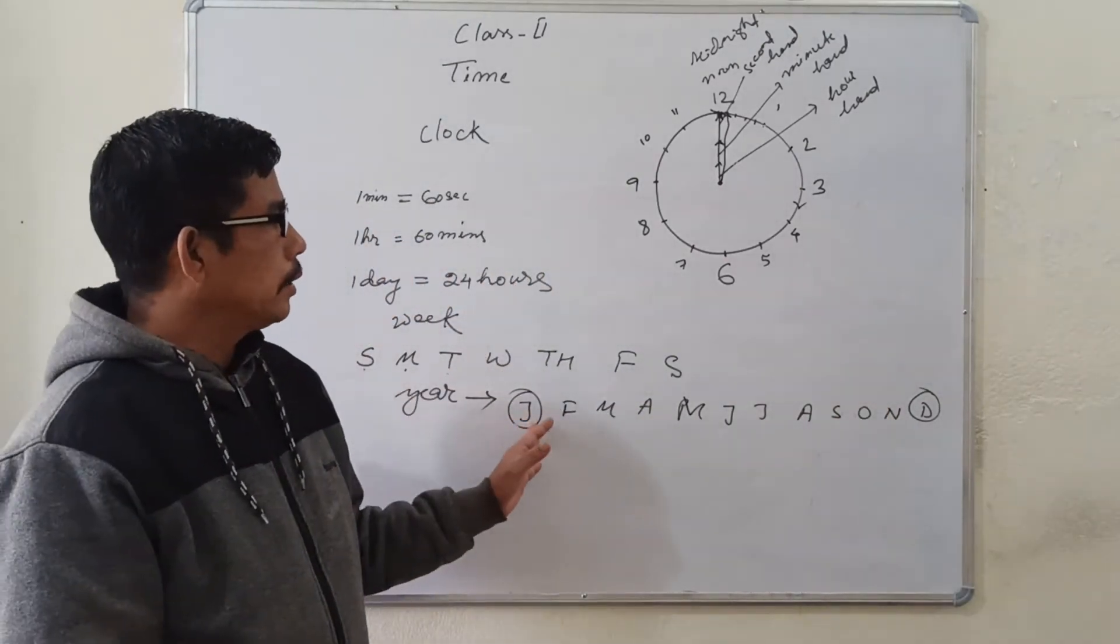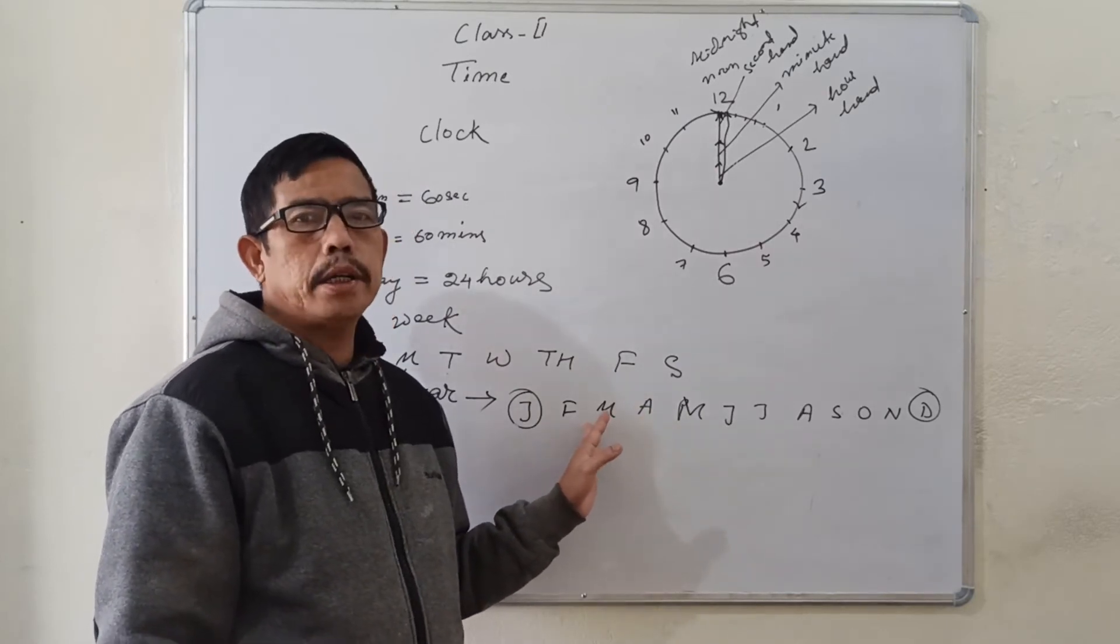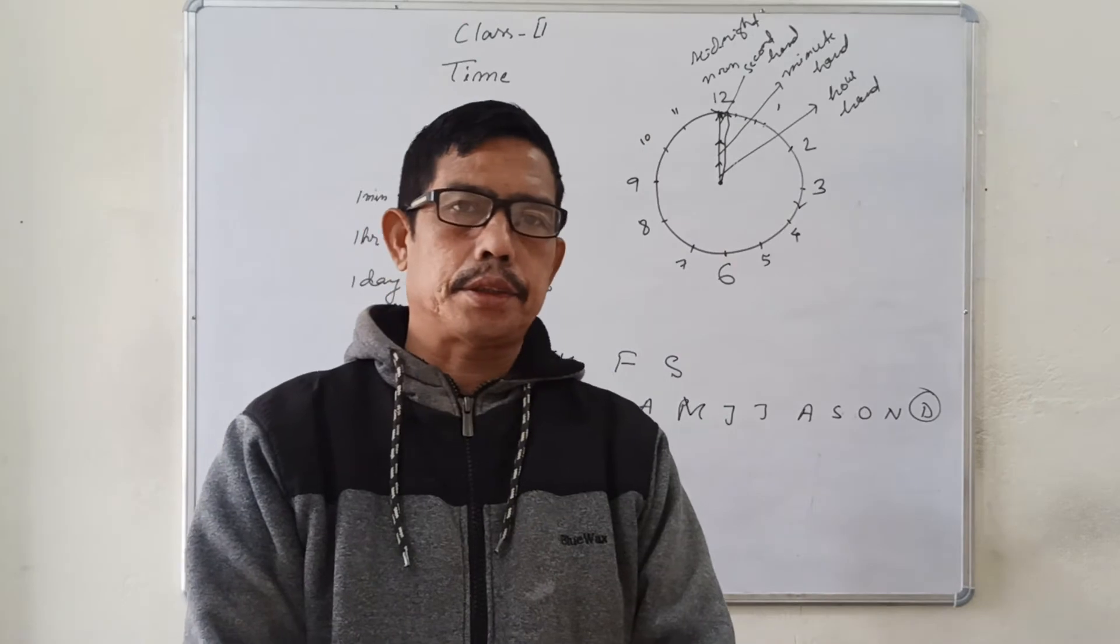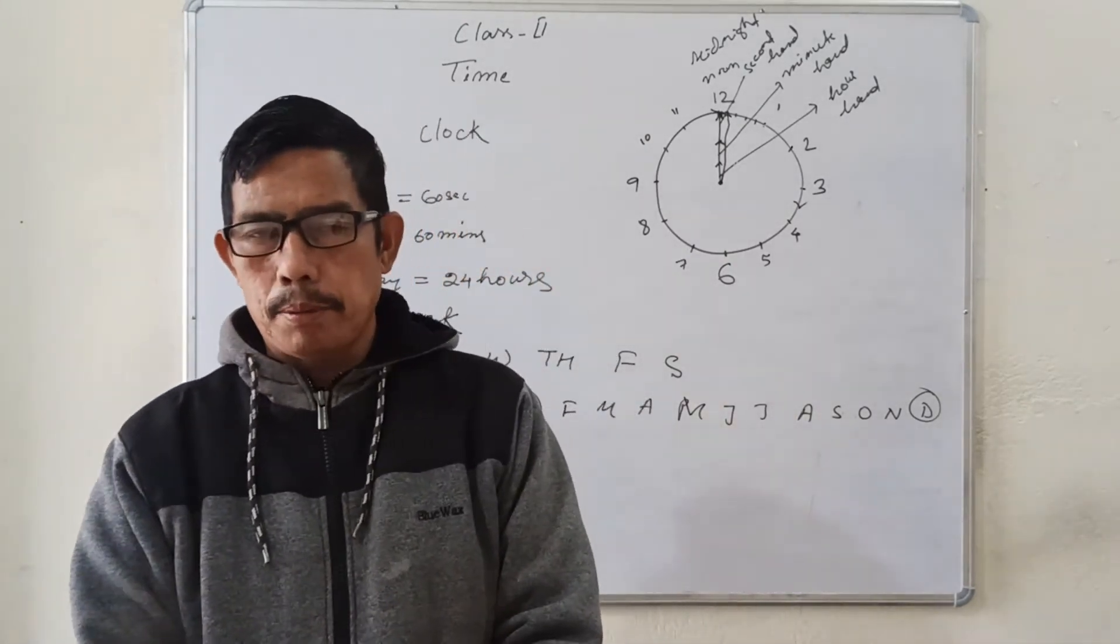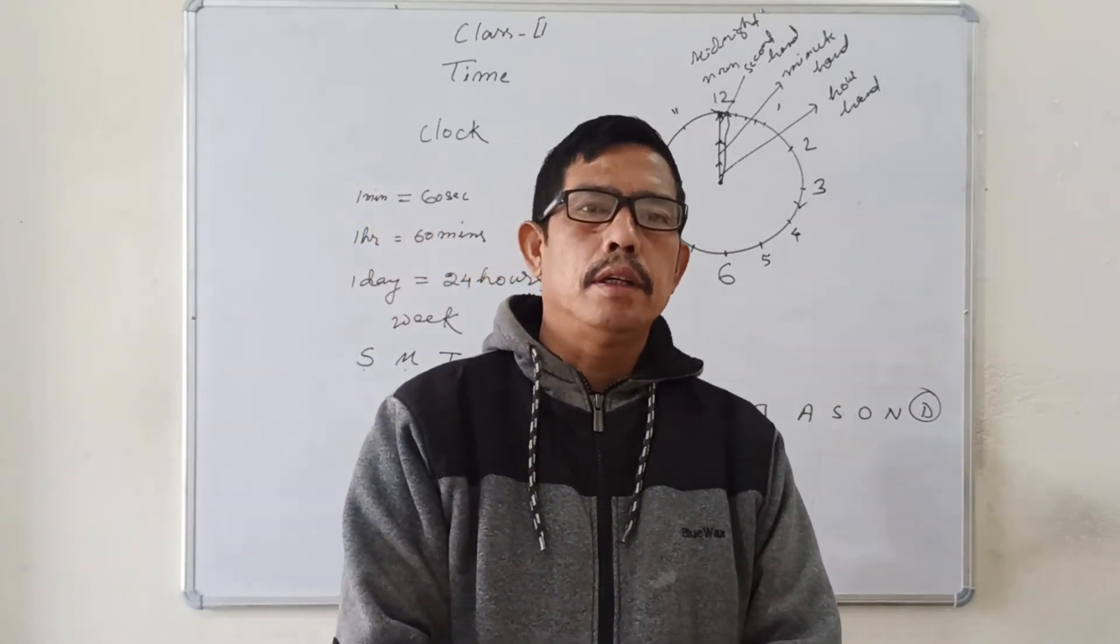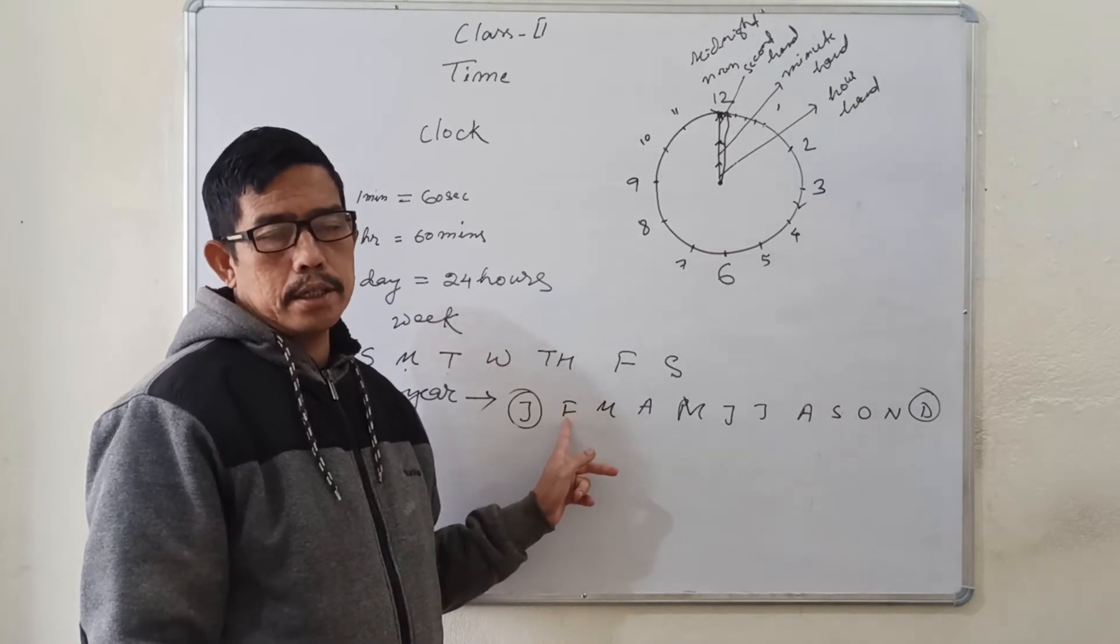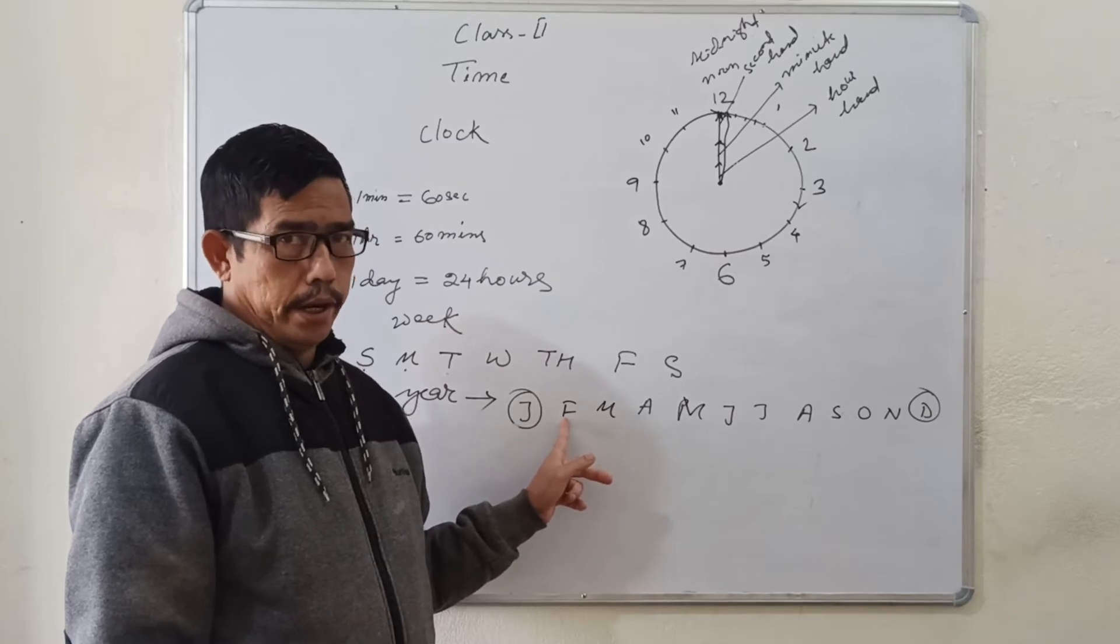And among the months of the year, there are some months having 30 days and there are some months having 31 days. And, exceptionally, February sometimes has 28 and sometimes 29. If the year is a leap year, February will have 29 days. Otherwise, in an ordinary year, February will have 28 days.